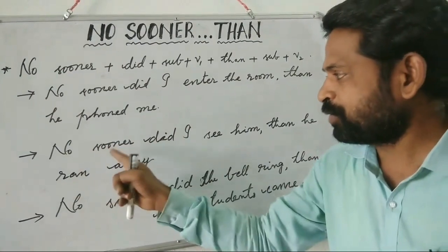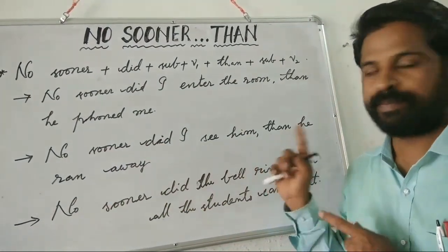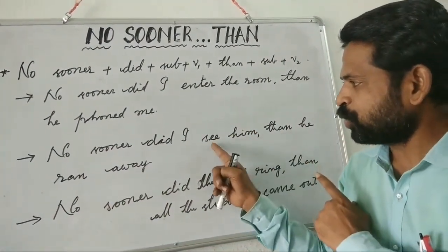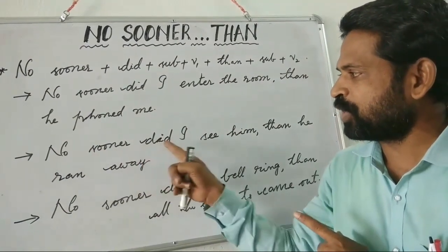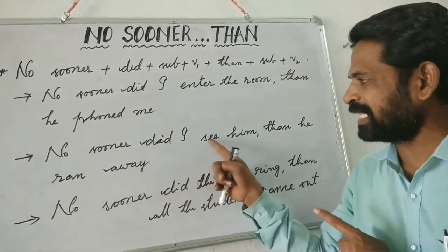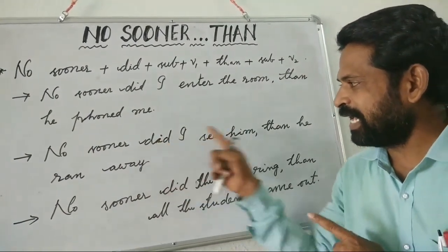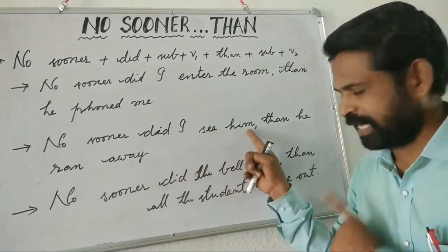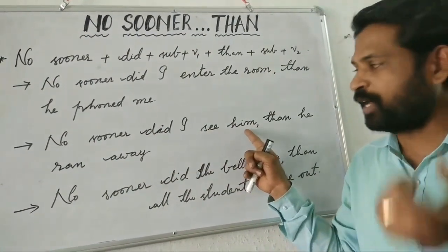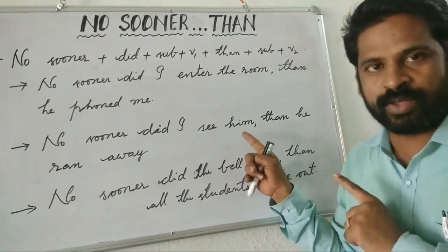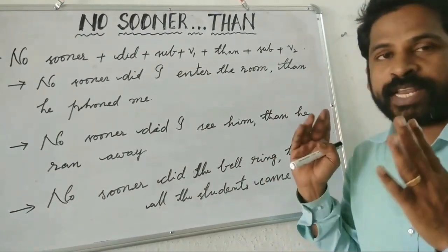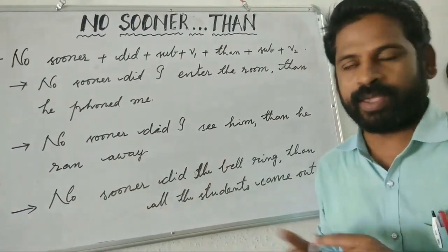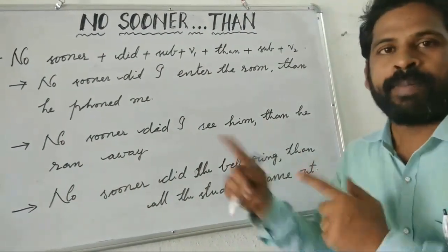Another example: no sooner did I see him — vadu naku cheshaamu ledo. No sooner did I see him, using 'did' and 'see' as V1. Then he ran away — vadu parigatran.